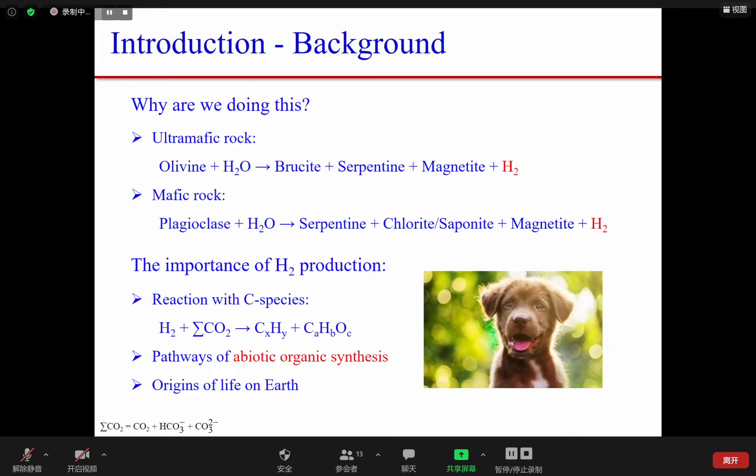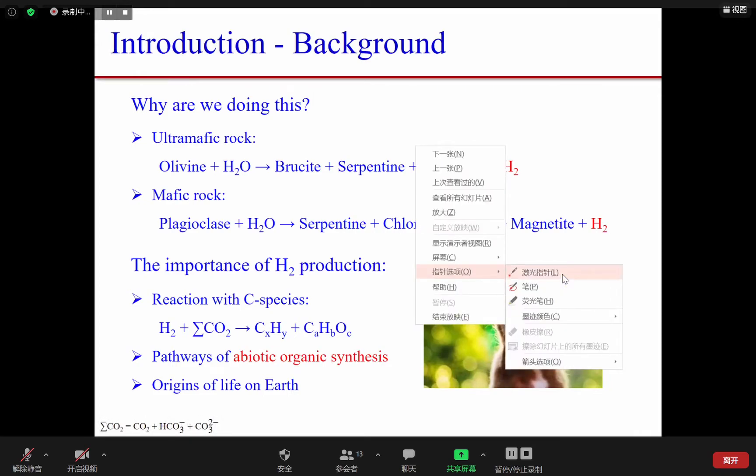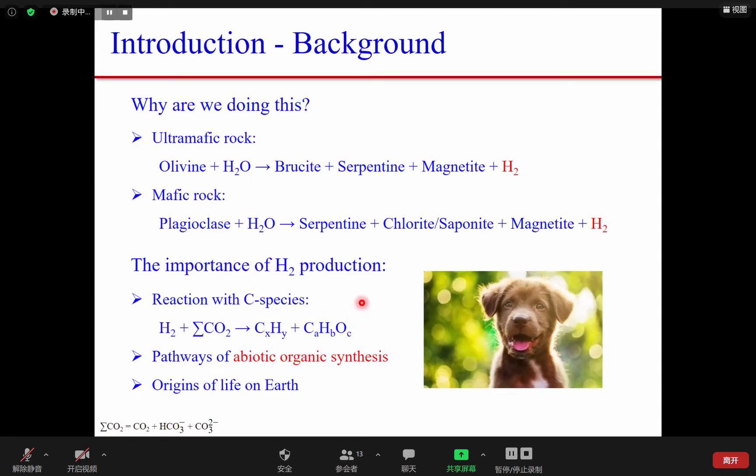One attractive aspect is the production of hydrogen after the reactions, with species in the ocean to form organics, which means the organics are formed by abiotic organic synthesis. One of the fundamental questions to solve the evolution of life on Earth.